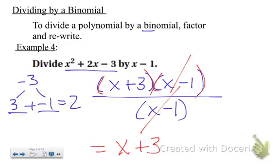So, again, you could multiply them back out, x plus 3 times x minus 1, to see that you do get the original polynomial that you were dividing into.